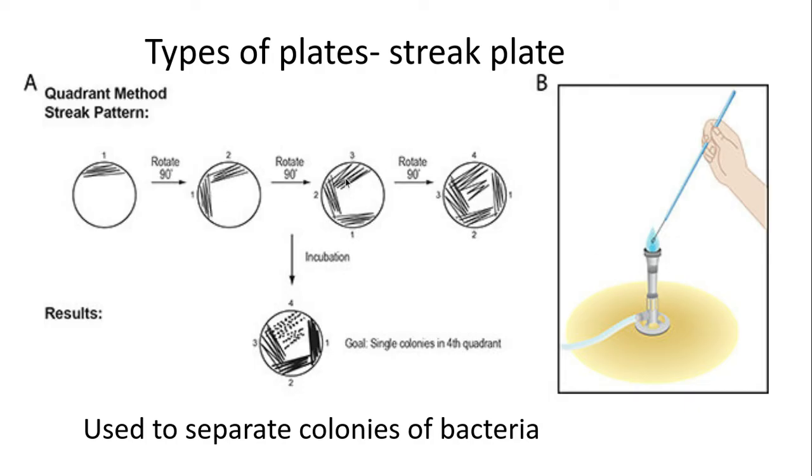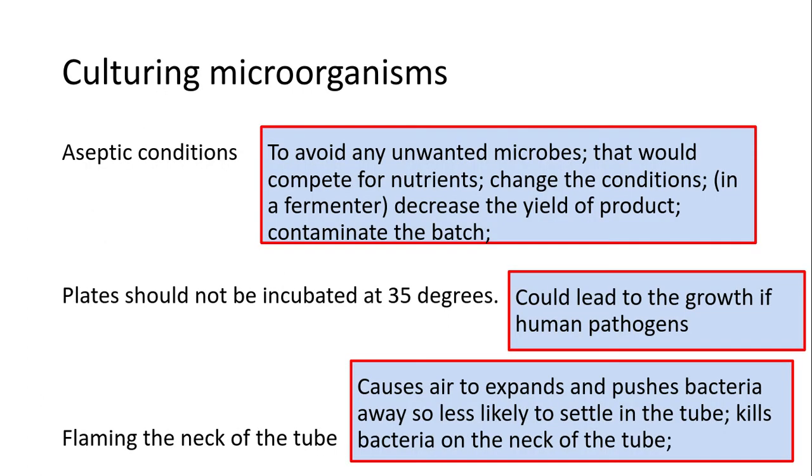You'd flame it again and drag it across for number three. Flame it again and drag it across for number four. Then you'd see here in number four that you'd have single colonies of bacteria.